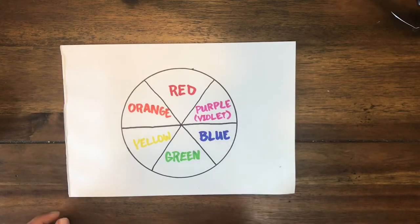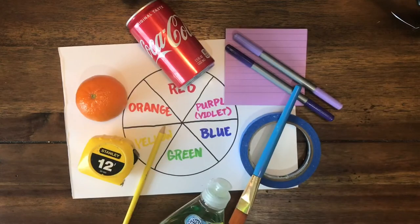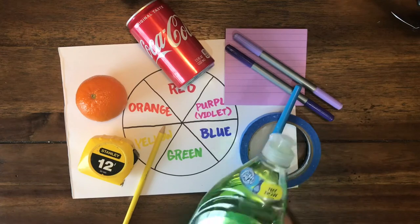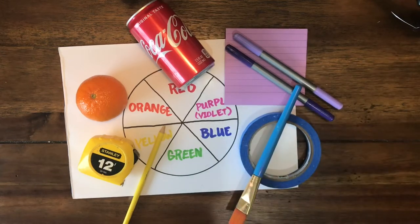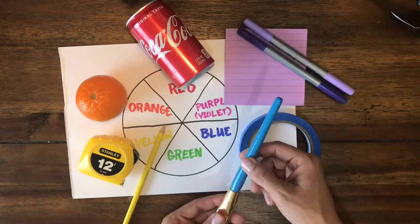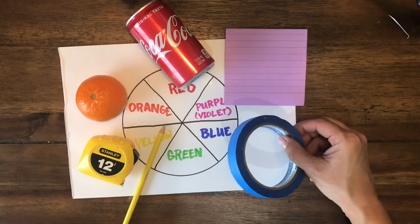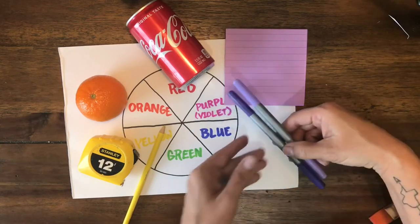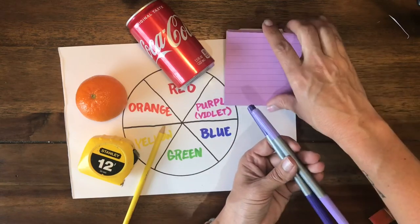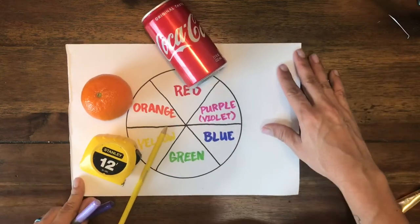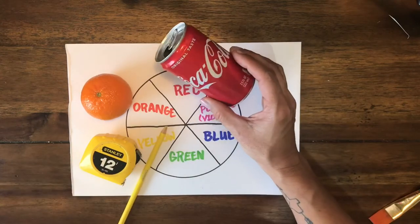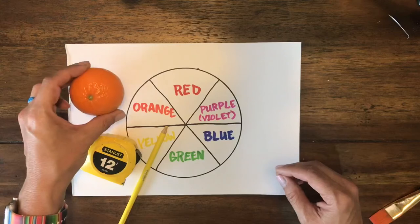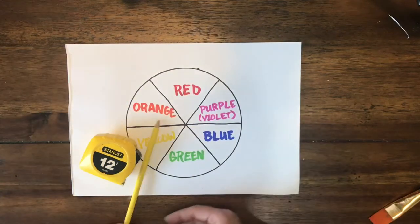All right, I'm back and I've got a few things to show you. I found the Dawn dish soap for green, I found a blue paintbrush and some blue tape for blue, some markers that are rolling away here that go with my purple and a purple post-it note, a Coca-Cola can for red, orange crayon for orange, and then I have a yellow colored pencil and a measuring tape for yellow.